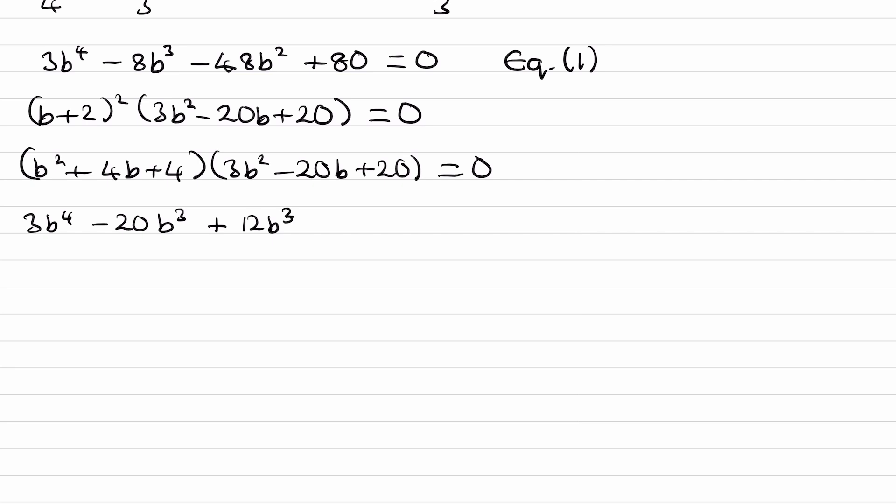Onto the b squared terms: we can do b squared times 20, 4b times minus 20b, and 4 times 3b squared. Onto the b to the 1 terms: 4b times 20, 4 times minus 20b, and 4 times 20. Simplify: 3b to the 4, these two terms combine to make minus 8b cubed, these three combine to make minus 48b squared, these two cancel out, and then we're just left with plus 80 equals 0.